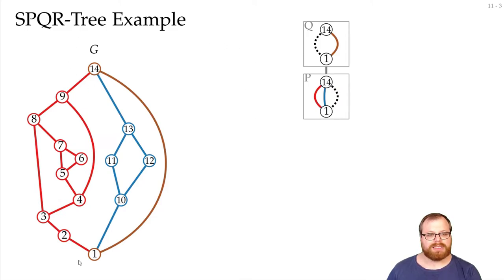If we go here, this is a separation pair, we have two components, so it's a P component. We have the red component here, and the blue component here, and then we have the reference edge.